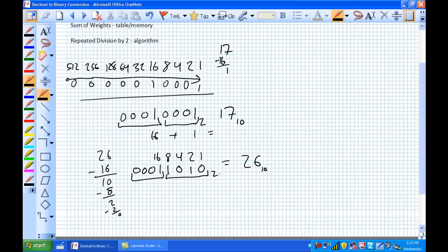That is our sum of weights table or memory method. This is obviously convenient for smaller numbers or numbers within the human realm. I'm not going to give you numbers greater than a bazillion on an exam. So what happens if someone presents you an incredibly large number? You wouldn't be able to do this unless you had all day and incredible memory to remember all those powers of 2.